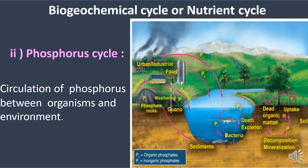In the phosphorus cycle, phosphate ions are absorbed by plants. Herbivores and carnivores absorb phosphorus through feeding. After the death of all organisms, the dead organic matter undergoes decomposition. Inorganic nutrients are separated from organic matter through a process called mineralization, carried out by microbes. The inorganic phosphate is thus returned to the soil, where plants can absorb it again as phosphate ions, completing the phosphorus cycle.